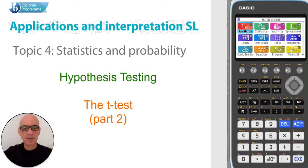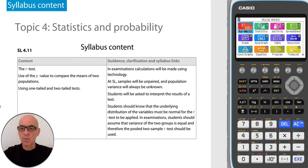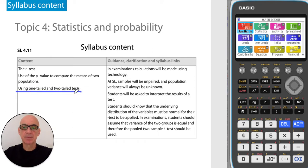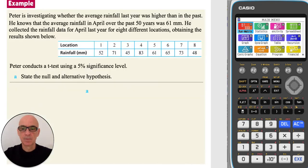Hello, this video is on hypothesis testing, specifically on the t-test, with examples on one and two tail tests as shown here in the syllabus. As with all hypothesis tests, the first step is to state the null and alternative hypotheses.